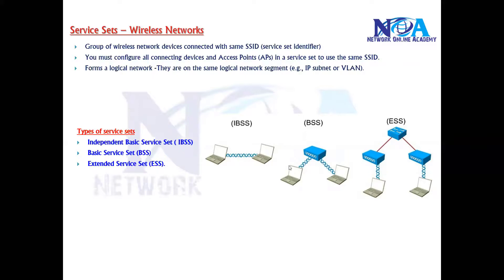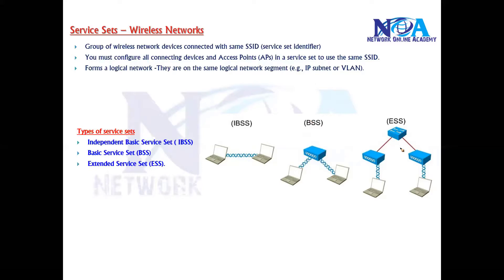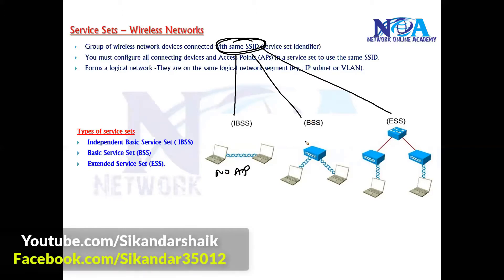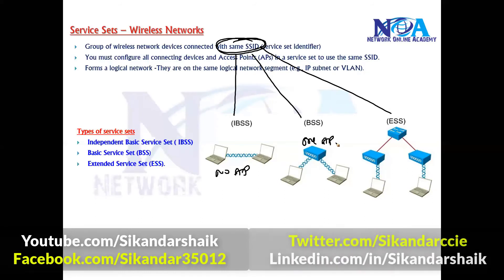If you connect your devices with the help of just one access point, we call that a Basic Service Set. If you connect using multiple access points, we call it an Extended Service Set — two or more access points providing connectivity where all devices share the same SSID. So the difference between the three types is: no access point for Independent, one access point for Basic, and multiple access points for Extended Service Set.